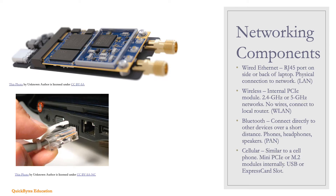Laptops can have a combination of four types of networking components. They can connect physically to the network through an RJ45 jack, which connects the laptop to a LAN. For wireless connectivity — WLAN — laptops use 2.4 GHz or 5 GHz networks via a WLAN module with antennas. A Bluetooth module allows direct connection to nearby devices such as phones, headphones, and speakers, forming a PAN. Cellular modules connect to telecommunication towers to transfer data and can come in PCIe or M.2 form. You can also add USB devices or use built-in ExpressCard slots for added functionality.